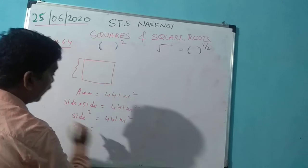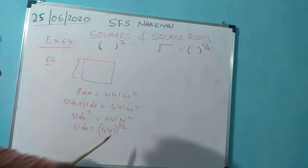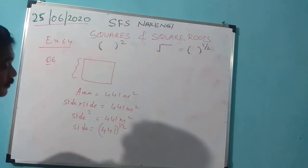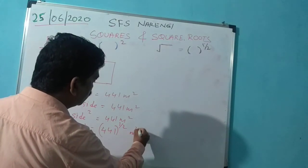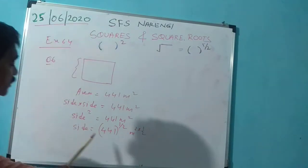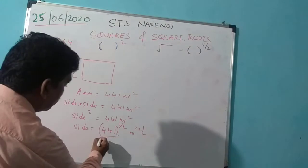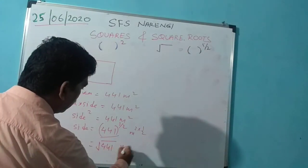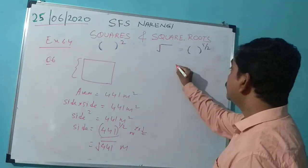Side × side means side squared equals 441 m². So the side will be 441 raised to the power 1/2, because the 2 moves to the other side and becomes 1/2. So m² raised to 1/2 gives us m. This means we need to find the square root of 441.